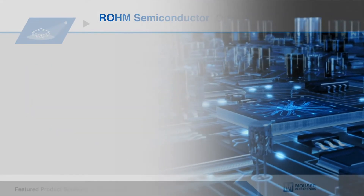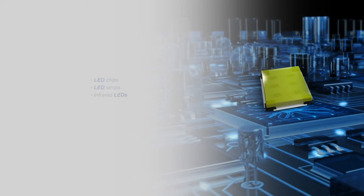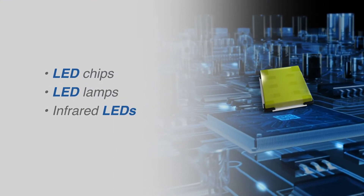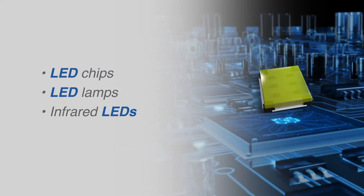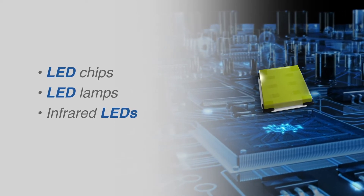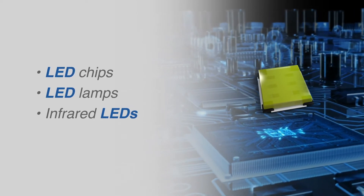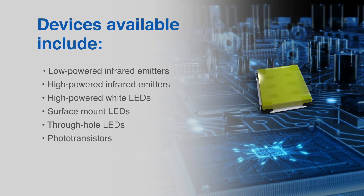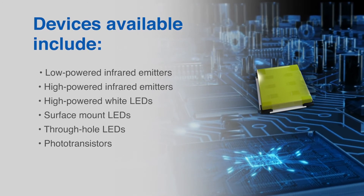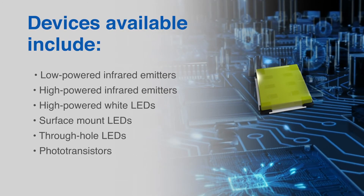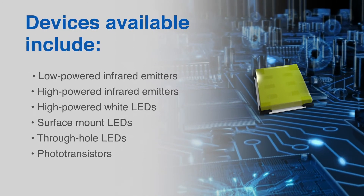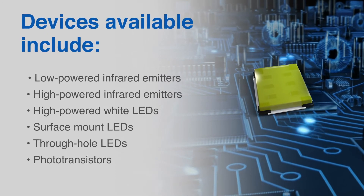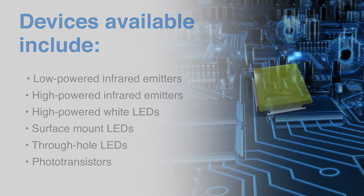Roam Semiconductor LEDs feature monocolor and multicolor chip LEDs, monocolor LED lamps, and infrared light emitting diodes for every user's needs. Devices available include low and high powered infrared emitters, high powered white LEDs, standard surface mount LEDs, through hole LEDs, and photo transistors.